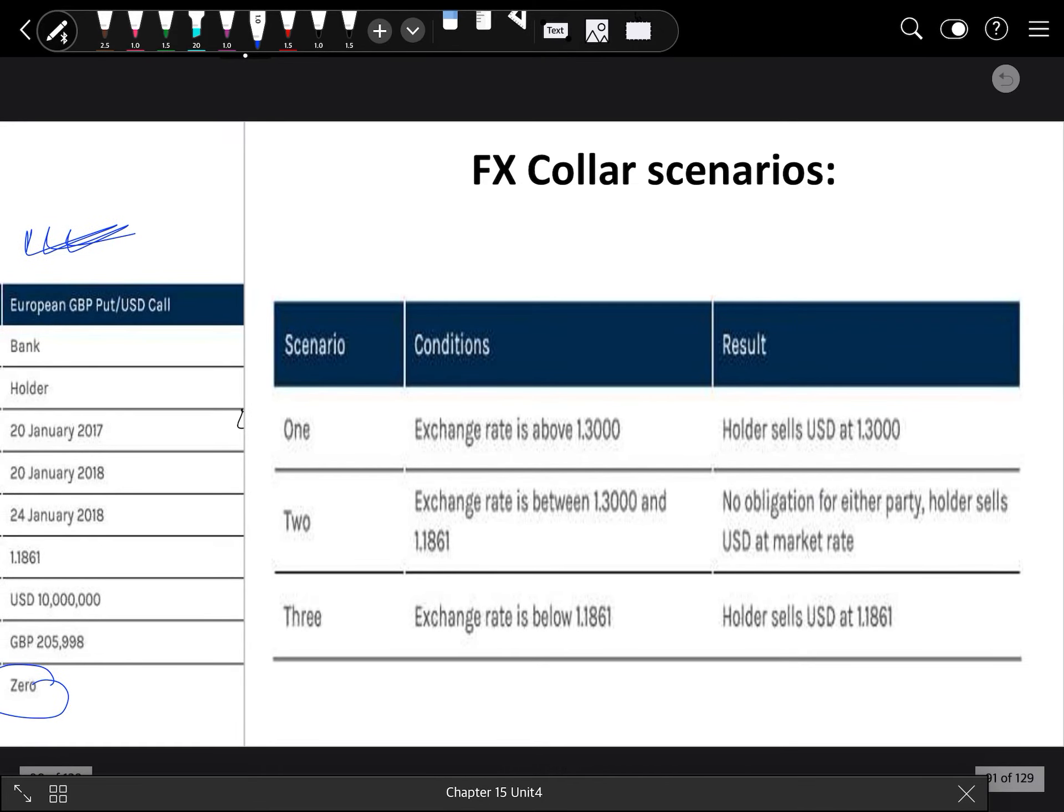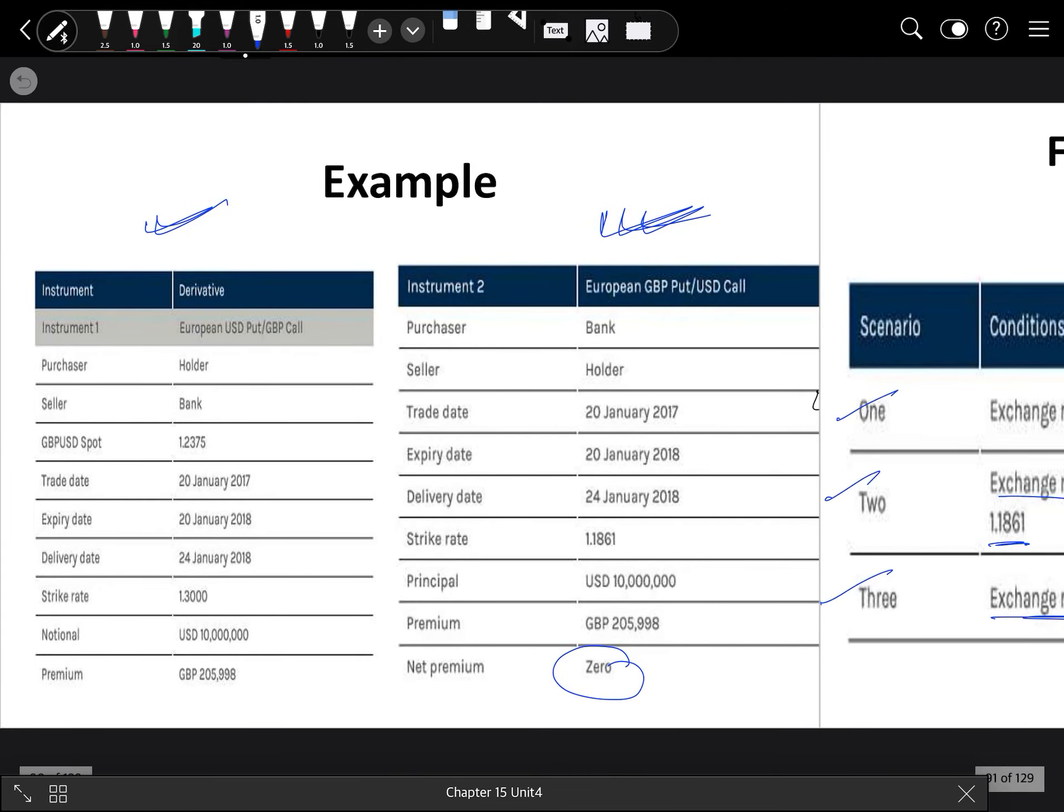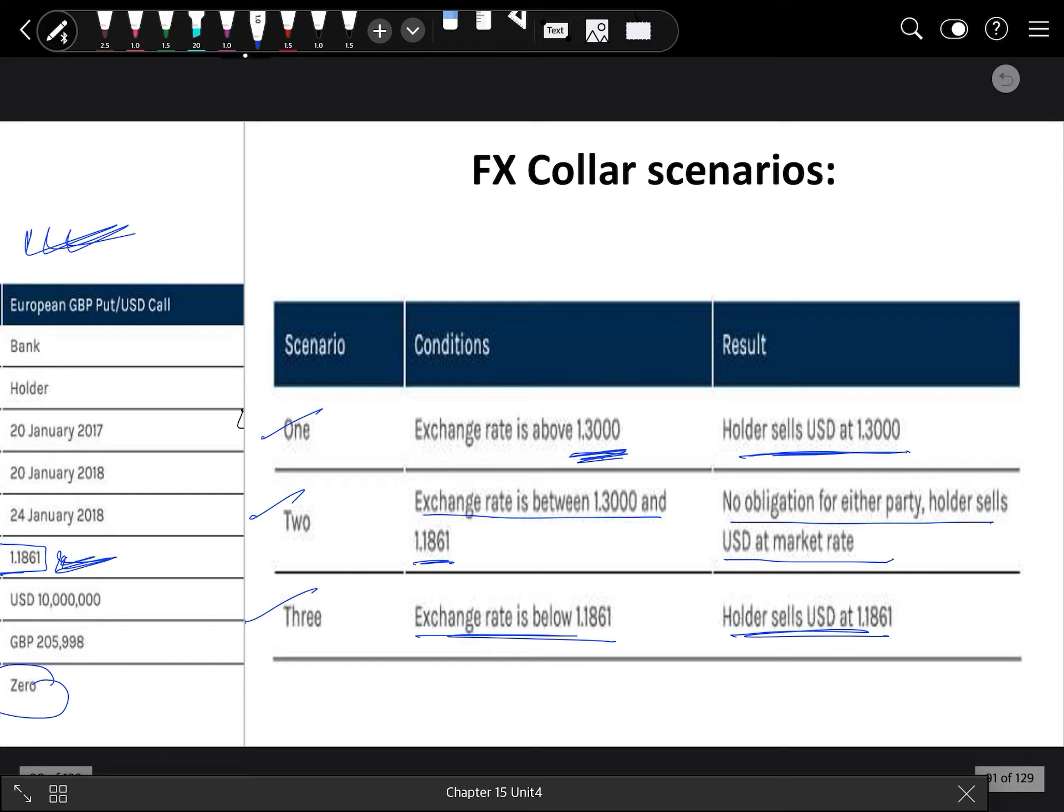Now in this case there are three scenarios. One, if exchange rate is above 1.300, the holder will sell USD at 1.300. Two, if exchange rate is between 1.300 and 1.1861, there is no obligation for either party and the holder sells USD at market rate. Three, if exchange rate is below 1.1861, then holder sells the USD at 1.1861. We have decided one strike rate at 1.30 and another at 1.1861. It's the same - between these two our transaction happens. If it goes above or below, the same transactions apply.